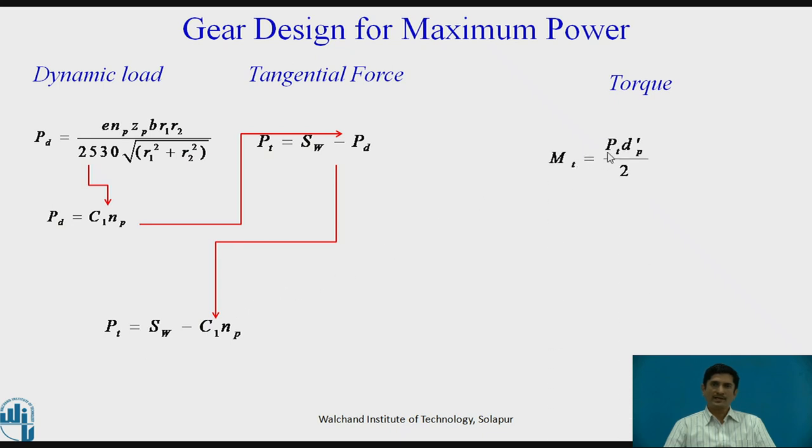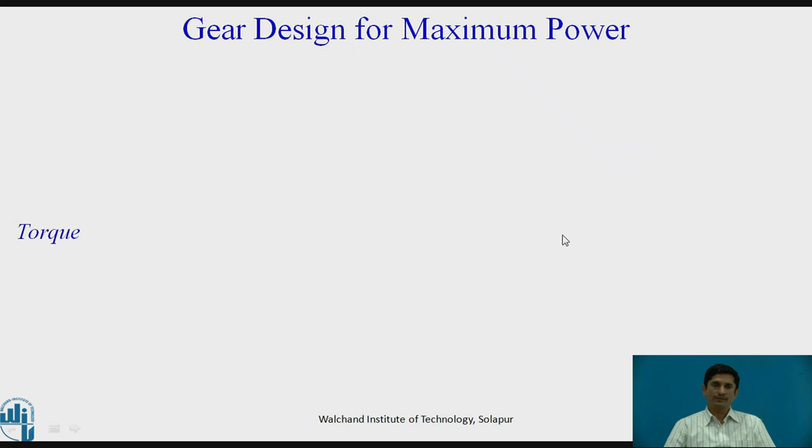Torque MT is given as PT into DP by 2. I can use this equation. MT equals, put the value of PT, SW minus C1 NP, DP divided by 2.